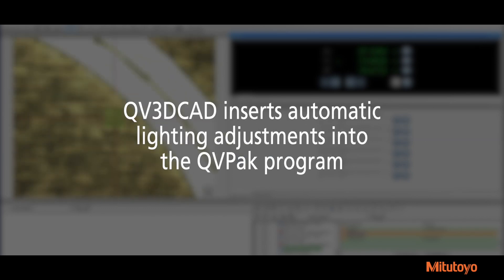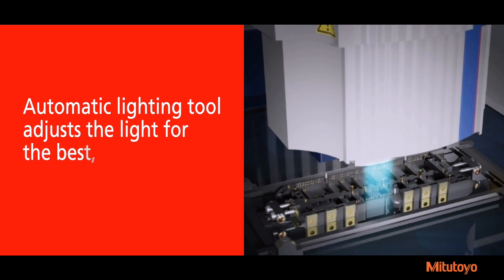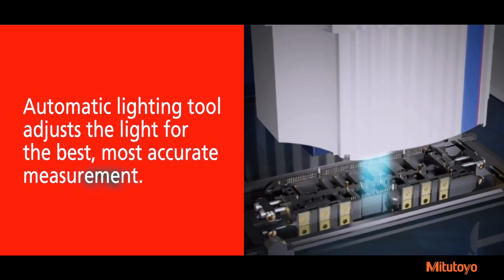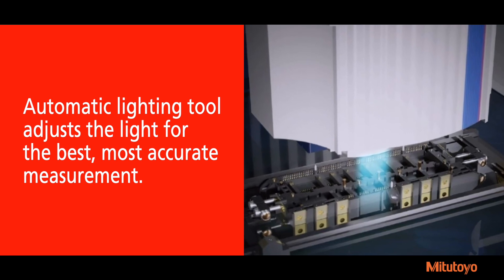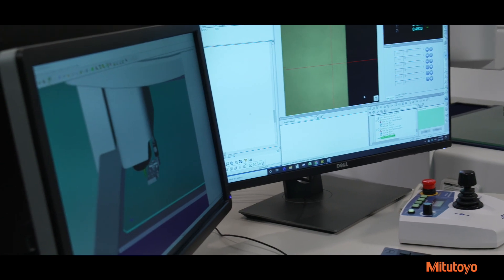Since a part isn't available for lighting adjustments in offline mode, QV3D CAD inserts automatic lighting adjustments into the QVPAC program. When the program is used to inspect an actual part on the Quick Vision machine, the automatic lighting tool adjusts the light for the best most accurate measurement.